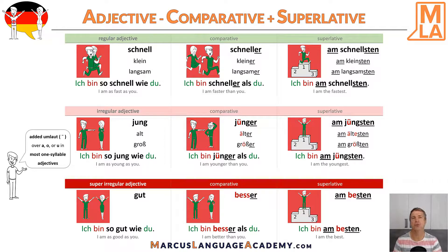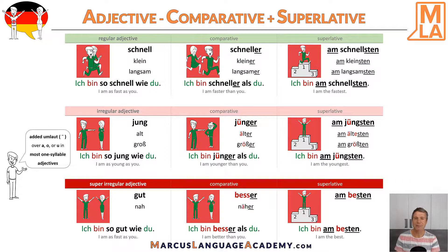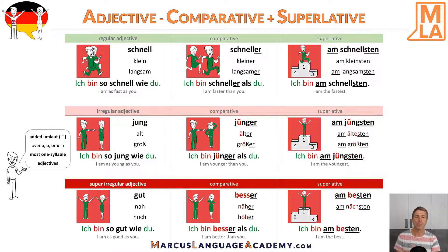And here are two more examples: 'nah', 'näher', 'am nächsten' — close, closer, the closest. And 'hoch', 'höher', 'am höchsten' — high, higher, the highest.